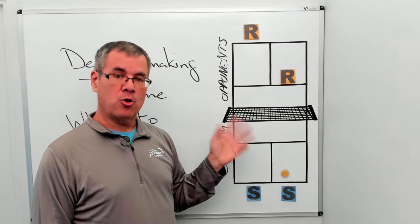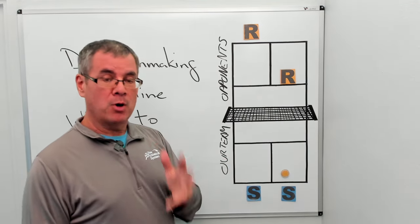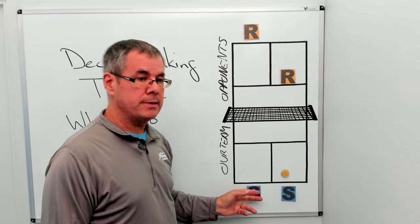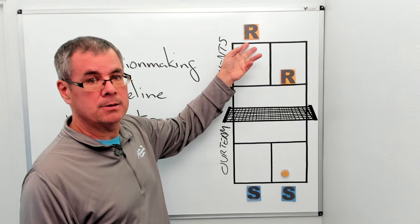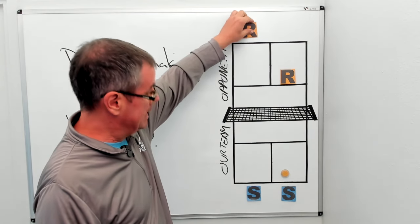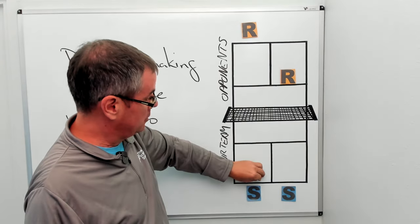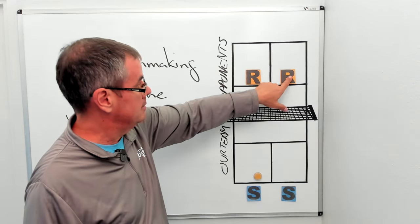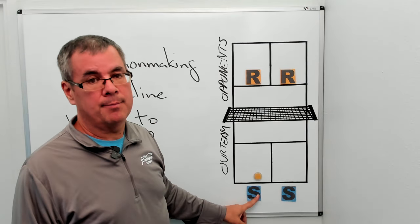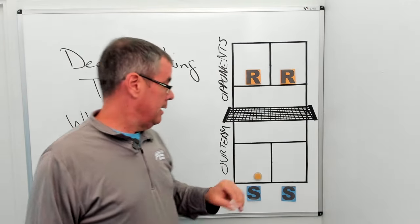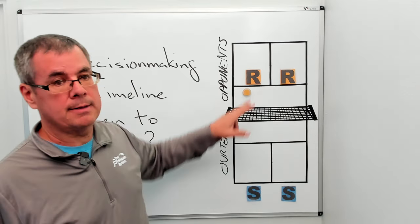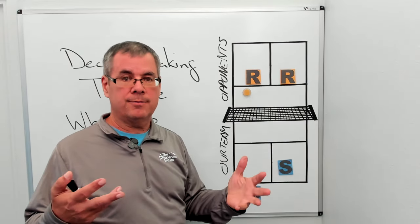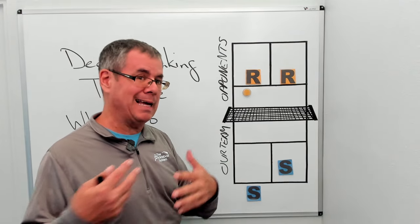Over here on the court board I'm going to set up the poach situation that happened in the rally at nationals. We were the serve team. Our opponents, Stephanie and Johan, were the return team. There had been a serve, then a return of serve to my partner Karina, and Stephanie had made her way up to the non-volley zone line. So this is Stephanie, this is Johan, this is me, and this is my partner Karina.